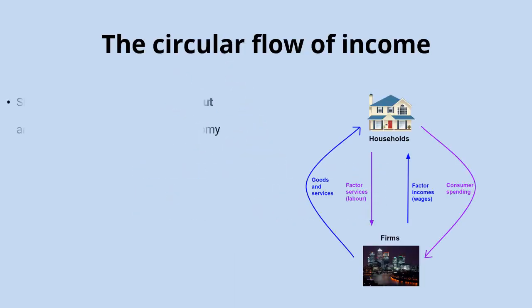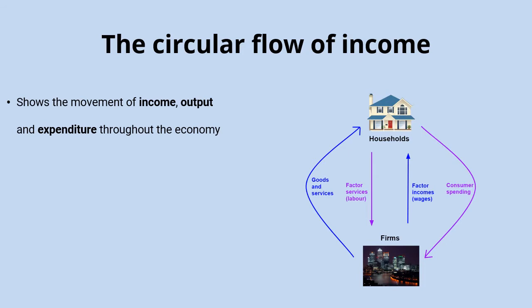The circular flow of income shows the movement of income, output and expenditure throughout the economy. It's really a basic model of how the economy works, with the two key agents being households and firms.